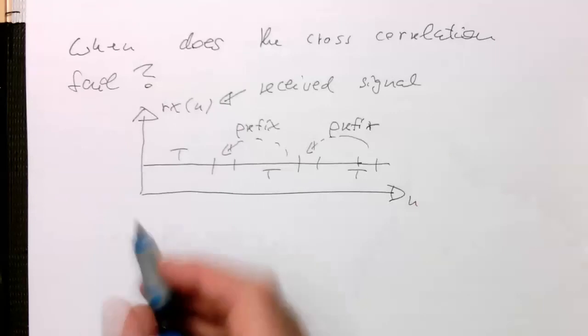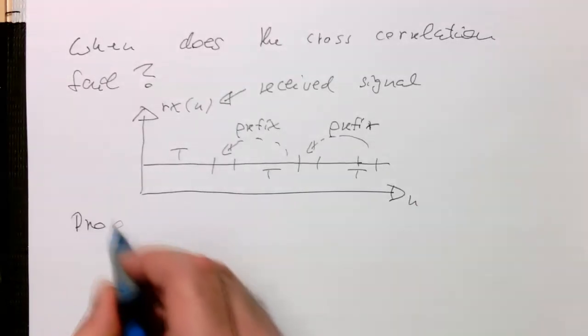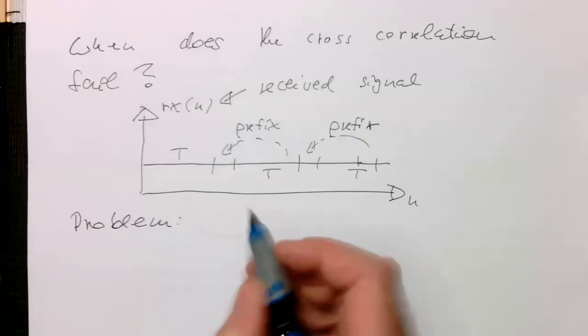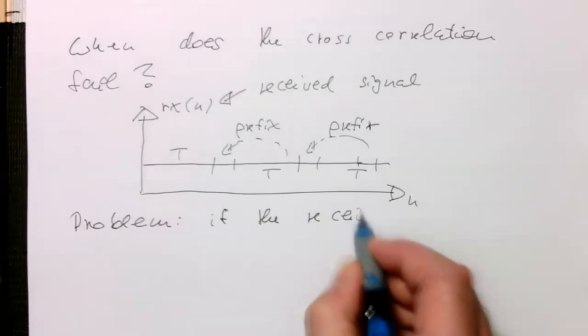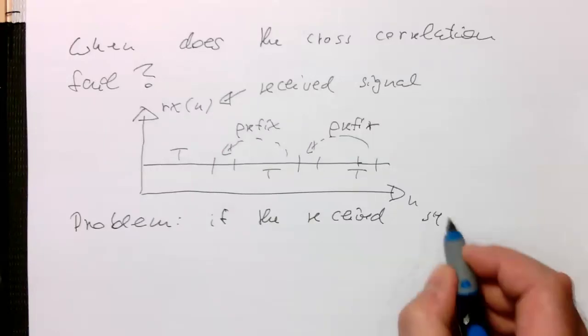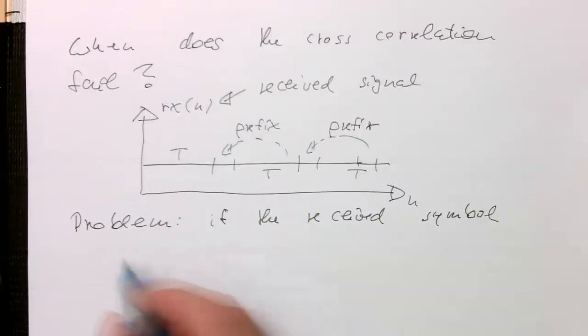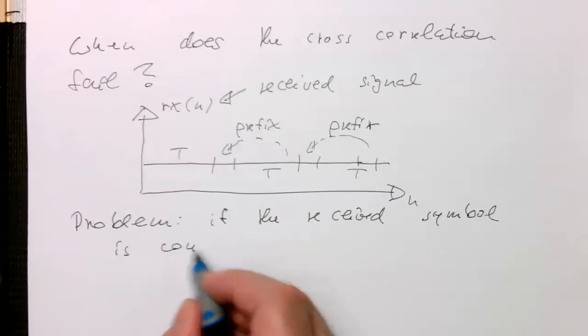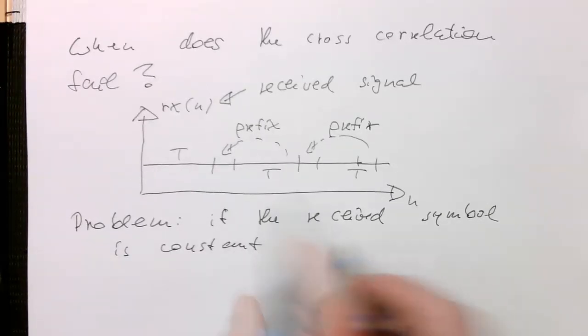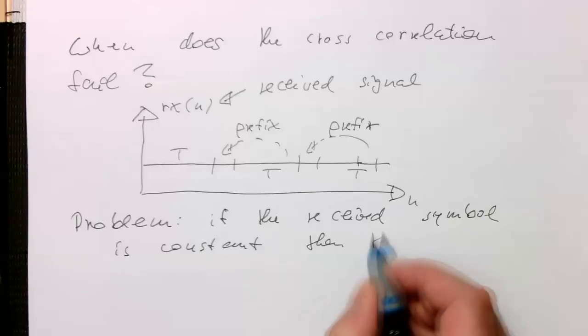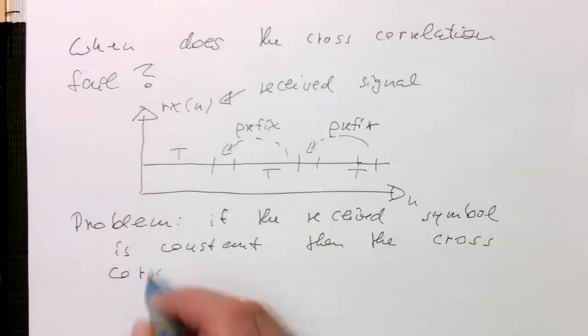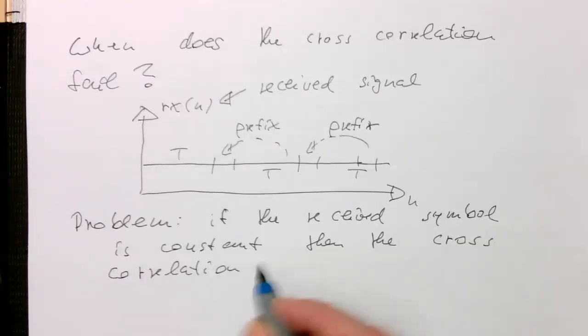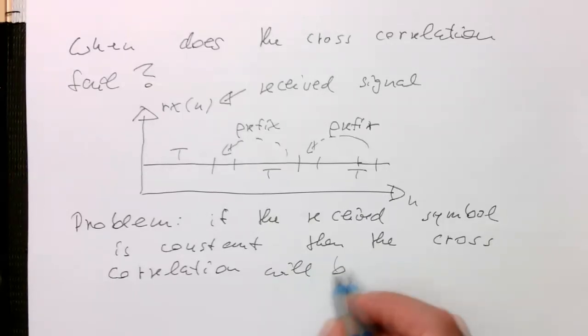Obviously, there's a problem here. If the received symbol is constant, then the cross-correlation will also be constant. The cross-correlation will be constant.